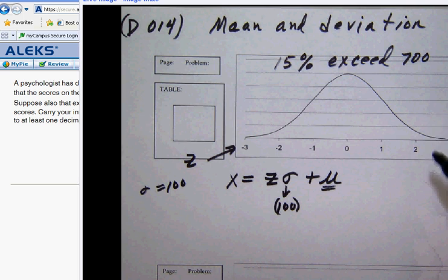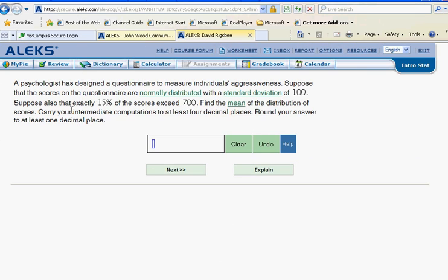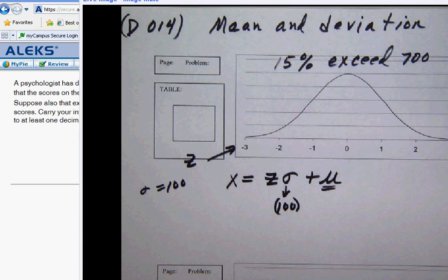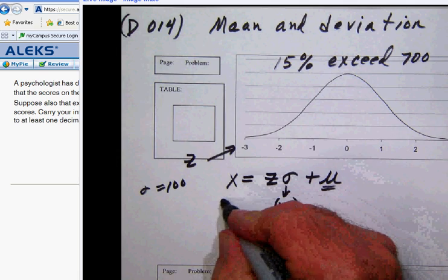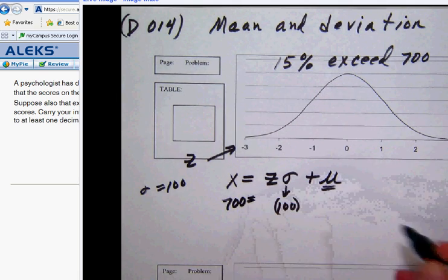Now notice up here, they told us a fact that 15% exceed a value of 700. Let's go back and find that in the reading. It says right here, suppose also that exactly 15% of the scores exceed 700. Now this 700 then is a particular score, so it must be an x value. And so that is our x value right there. That is x. Let's go back and make a note of that. That is a particular score. That is our x value. And so that must be 700 right there. That is our x.